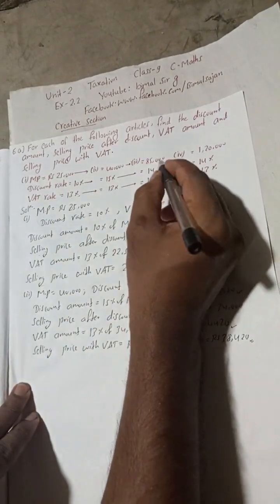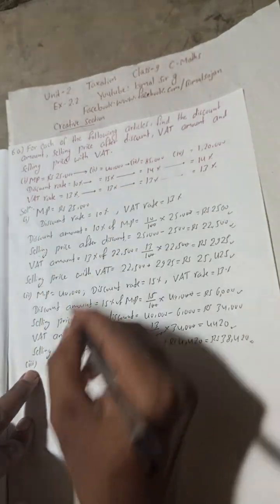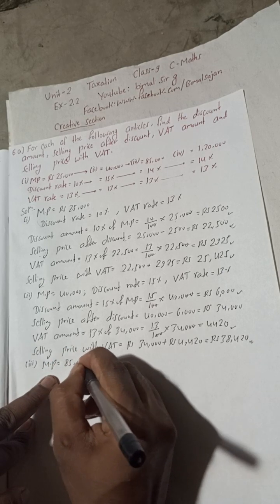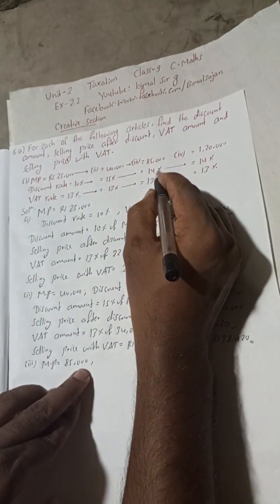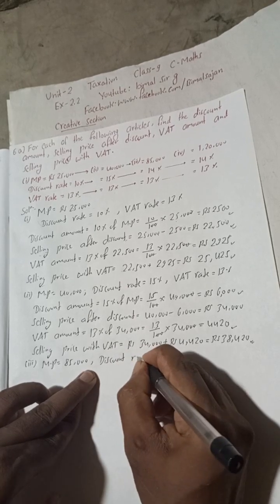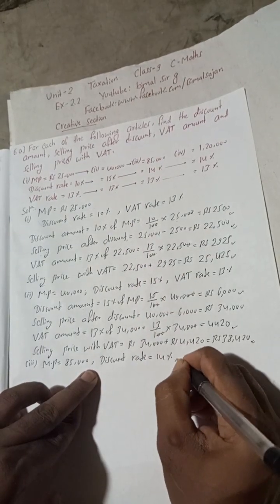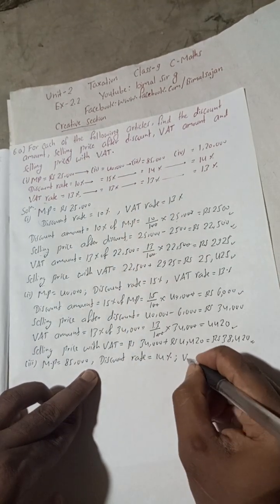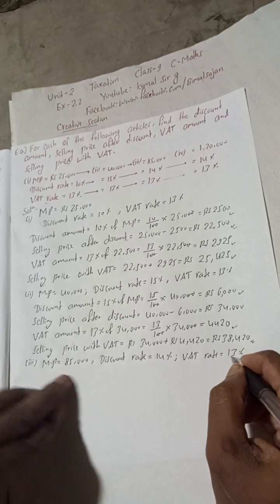Now number 3. In number 3, marked price is equal to 85,000. Discount rate is equal to 14%. VAT rate is equal to 13%.